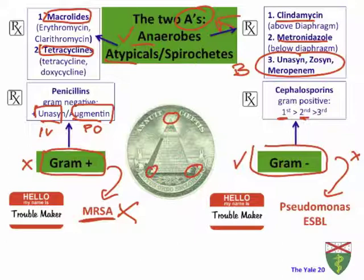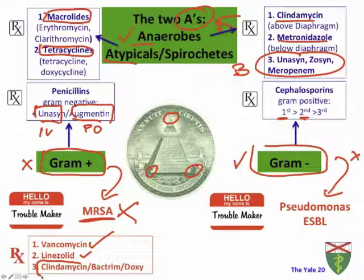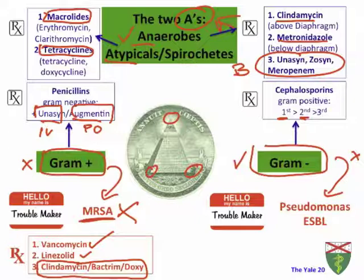What did we leave out? The troublemakers. All the antibiotics mentioned do not cover against your troublemakers. For MRSA, the classic go-to is vancomycin. You can also pick linezolid if there's an allergy. For a local cellulitis you think could be MRSA but the patient is not septic-appearing, not toxic, not immunocompromised, you don't need vancomycin right away. That's a situation where you can pick Clindamycin, Bactrim, or Doxycycline — great choices for MRSA if it's a local infection without sepsis or septic shock.